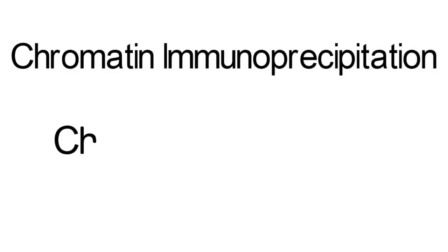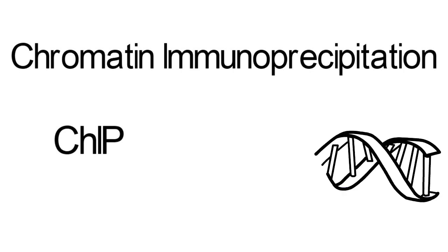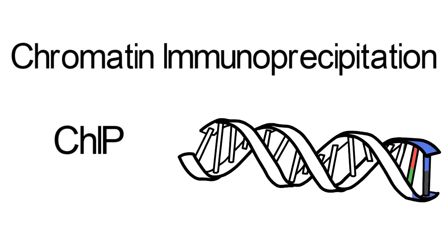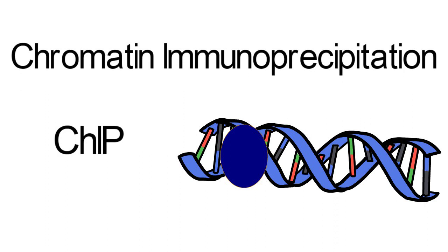Chromatin immunoprecipitation, or ChIP for short, is a technique used to determine specific interactions between DNA and a protein, such as a transcription factor. Knowing exactly what sequence on the DNA a protein binds to is useful information that helps scientists determine the function of that protein.